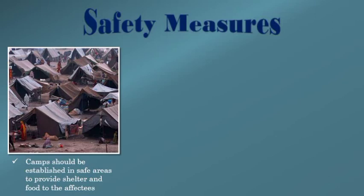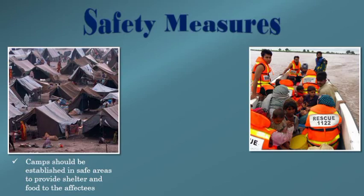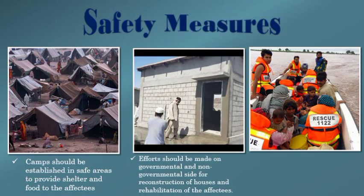جب سیلاب آ گیا ہو تو سب سے پہلے government کو چاہیے کہ جلدی سے camps لگائے جہاں متاثرہ لوگوں کو shelter، پناہ، چھت اور خوراک provide کی جا سکے۔ Effort should be made on governmental and non-governmental side for relief — government اور NGOs دونوں مل کر کام کریں۔ جو لوگوں کے مکان flood کی وجہ سے گر گئے ہیں تباہ ہو گئے ہیں ان کو دوبارہ reconstruct کروایا جائے — government کو یہ plan کرنا چاہیے اور NGOs کو بھی یہ کرنا چاہیے۔